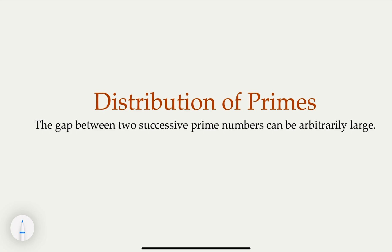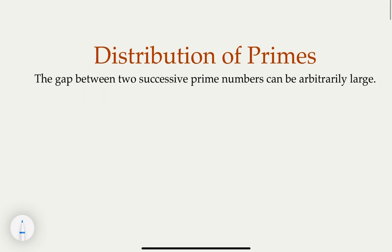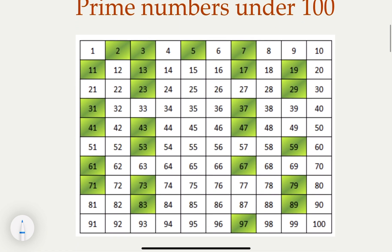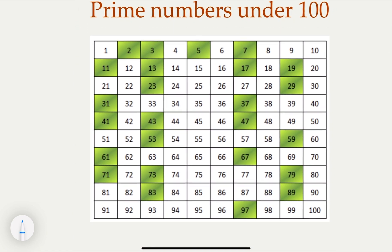Here we have another introduction to the distribution of primes. We claim that the gap between two successive prime numbers can be absolutely large. When I look at smaller prime numbers, they're really close to each other, but then the gap gets bigger.